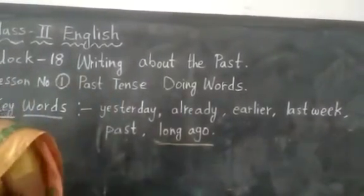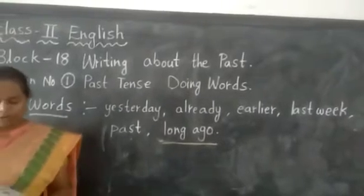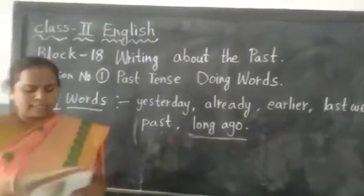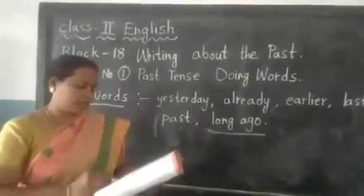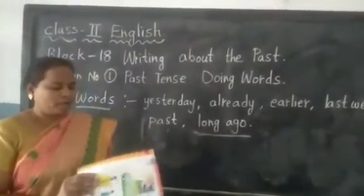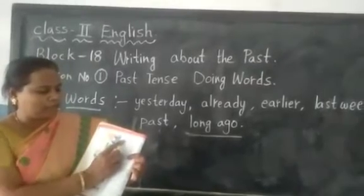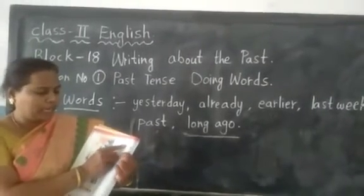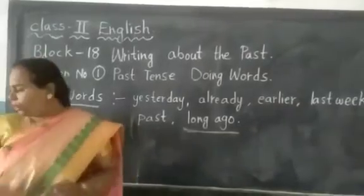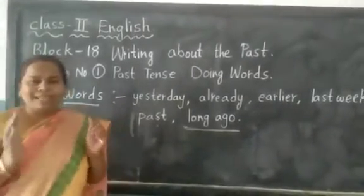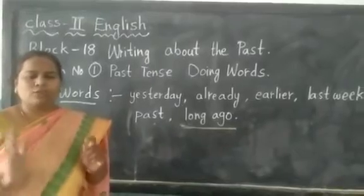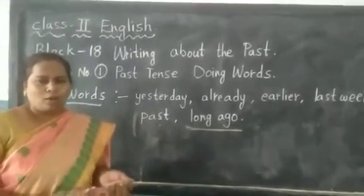If you see, for example, in our reader children, page number 108, this is the story Jal-seed. If you see, starting only they have written 'long ago, they lived with their old king in Chalna.' So whenever 'long ago' comes, it means the story happened in the past, the story happened long back.